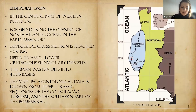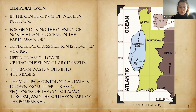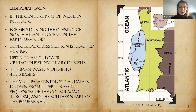I would like to briefly talk about the Lusitanian Basin, which is part of the central part of western Portugal, as you can see in the picture. It was formed during the opening of the North Atlantic Ocean in the early Mesozoic. The sedimentary profile in this basin reaches approximately six kilometers in thickness and mainly consists of upper Triassic to lower Cretaceous deposits.